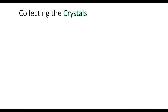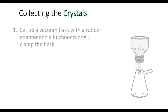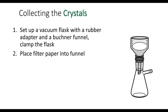Now it's time to collect the crystals. To do that, we set up a vacuum flask with a rubber adapter and a Buchner funnel on top, and we clamp the whole thing to make sure the flask doesn't fall over. Then we place a filter paper into the Buchner funnel and connect the flask to the vacuum.